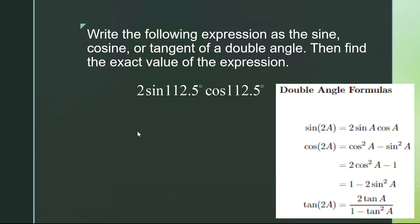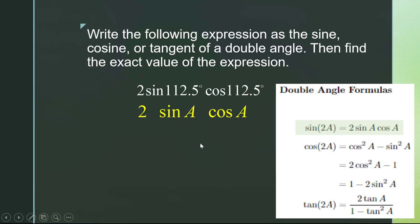Looking at this list, I can see that 2 sine of 112.5 degrees times cosine of 112.5 degrees looks like 2 sine(a) cosine(a). And according to this formula, it's equal to sine of 2a.